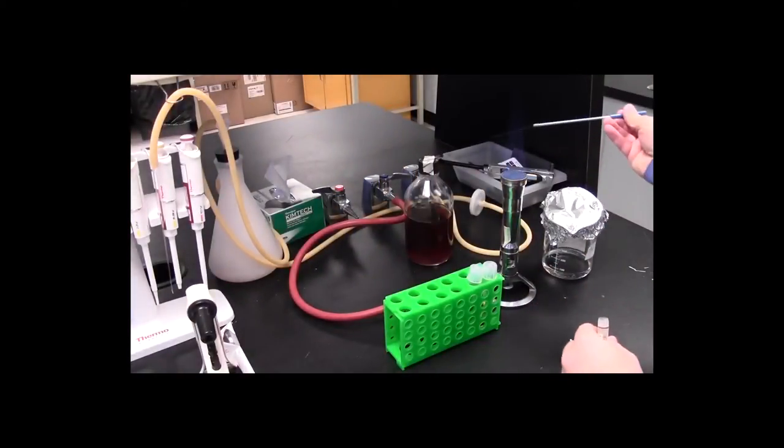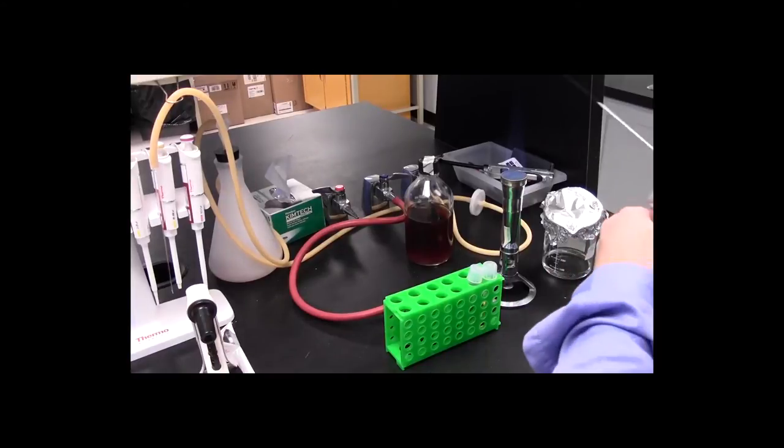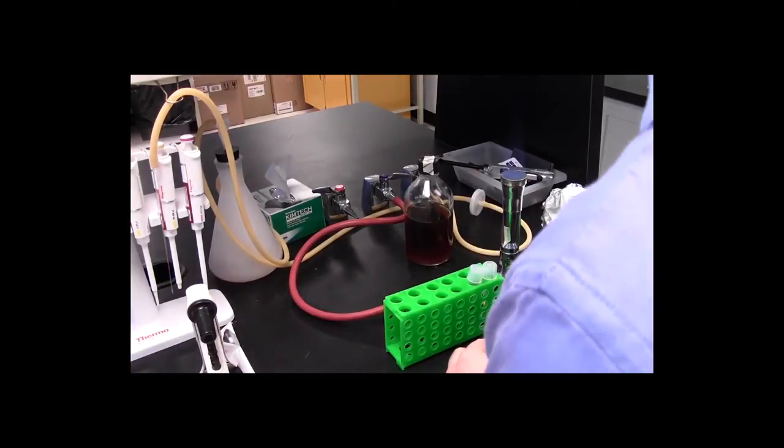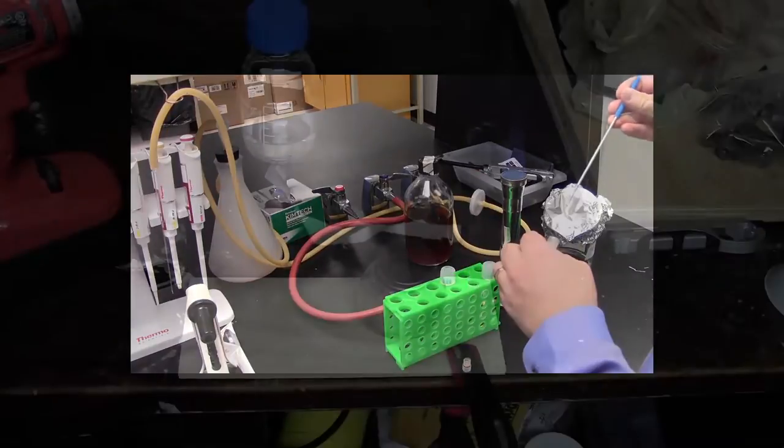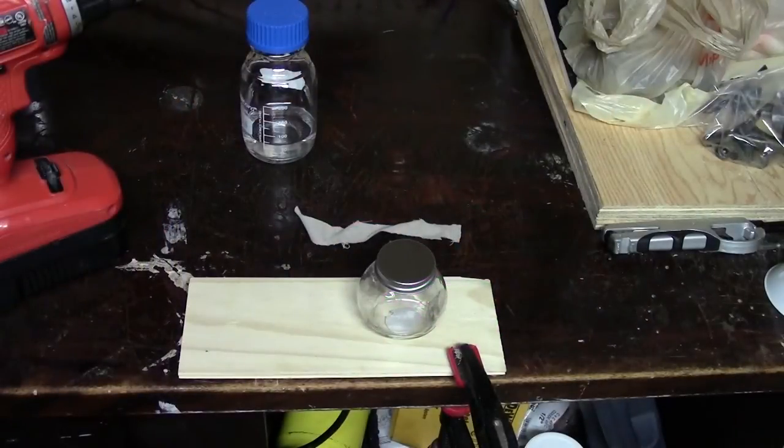In the lab, we traditionally use a Bunsen burner, but of course these are somewhat expensive and can be a little dangerous to use around the house. A cheap option that you can make often just with scrap materials lying around the house is something called an alcohol lamp.